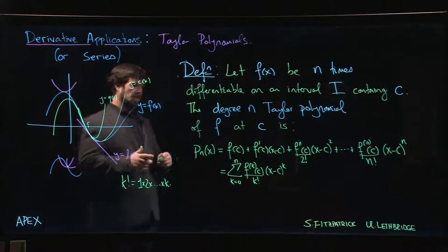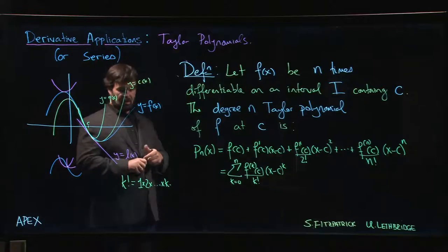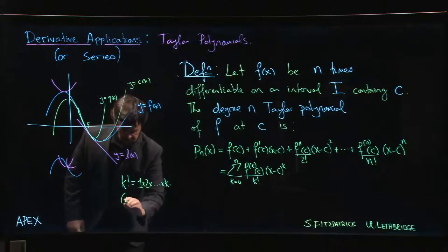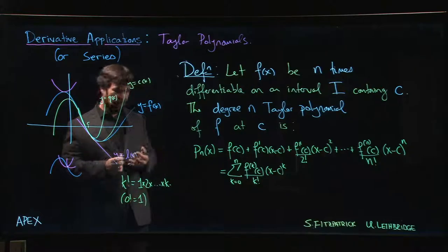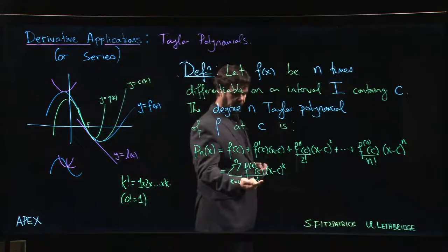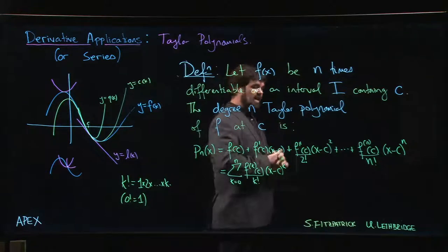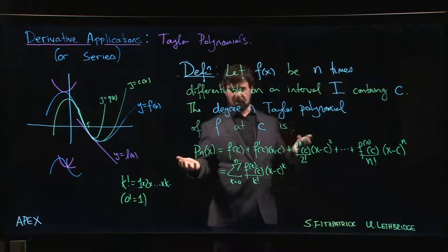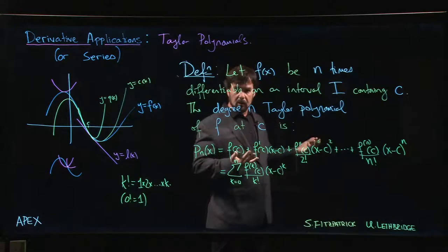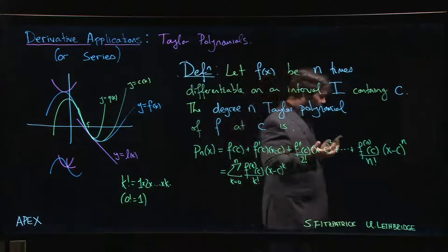To make this formula work there's a convention that 0 factorial is defined to be 1, so that you can write all the terms. There are other reasons why 0 factorial should be 1 other than making the formula work, but at this point in your career you can tell yourself that's why.